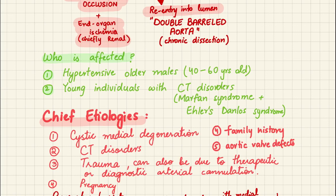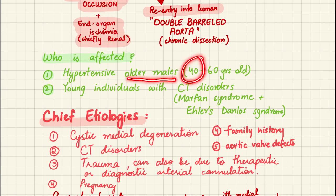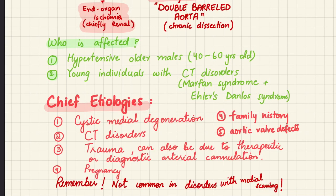Aortic dissection has two main causes: high blood pressure or poor intrinsic quality of the vessel wall. High blood pressure typically affects older males in their 40s to 60s. If it occurs in young individuals, they likely have connective tissue disorders such as Marfan syndrome or Ehlers-Danlos syndrome.